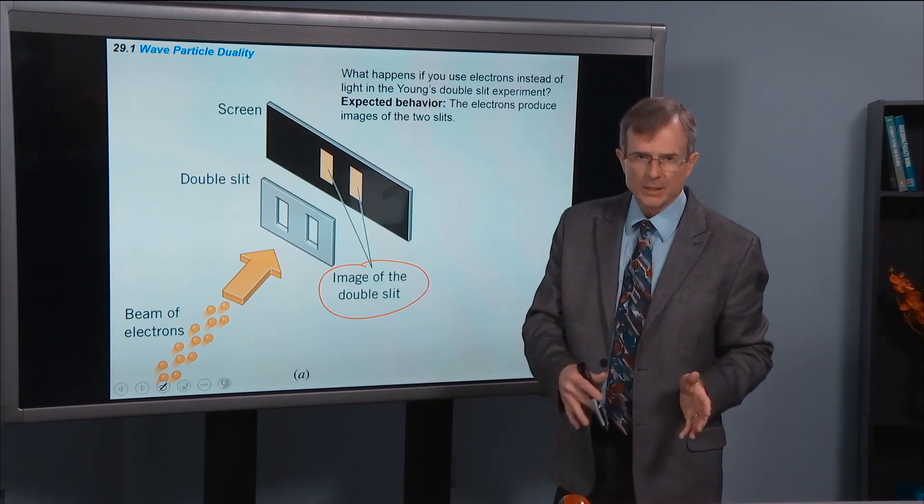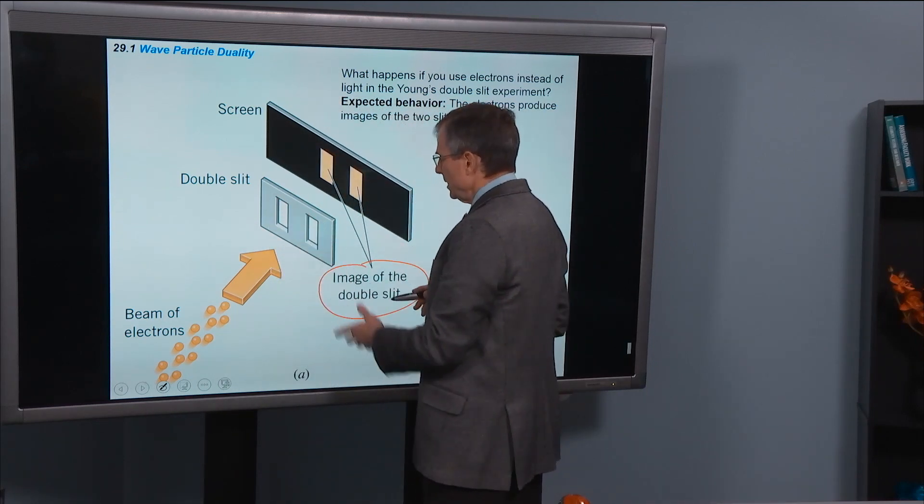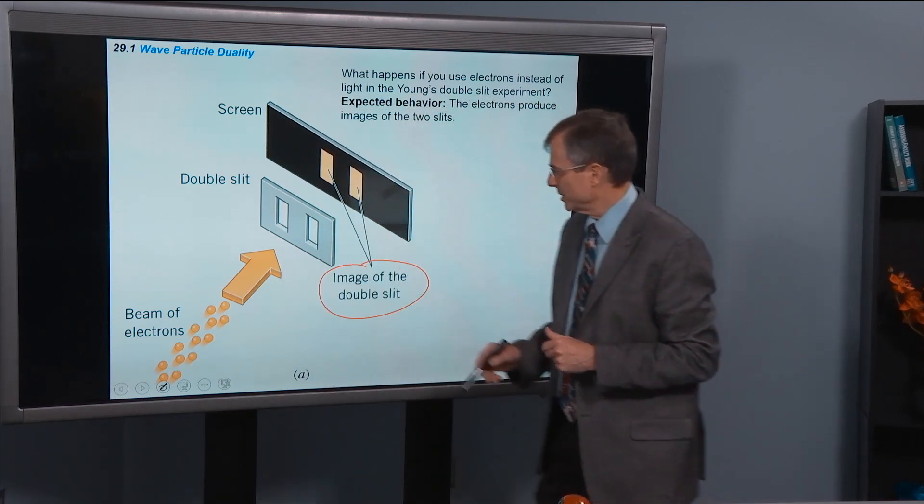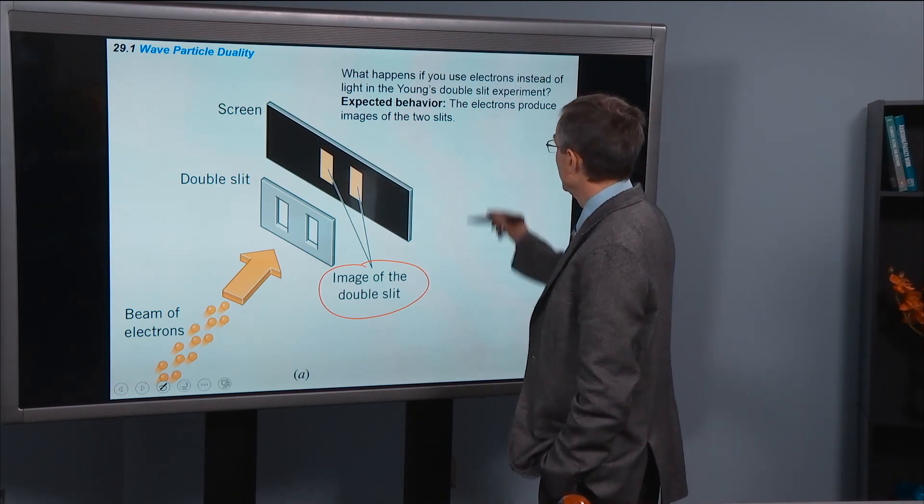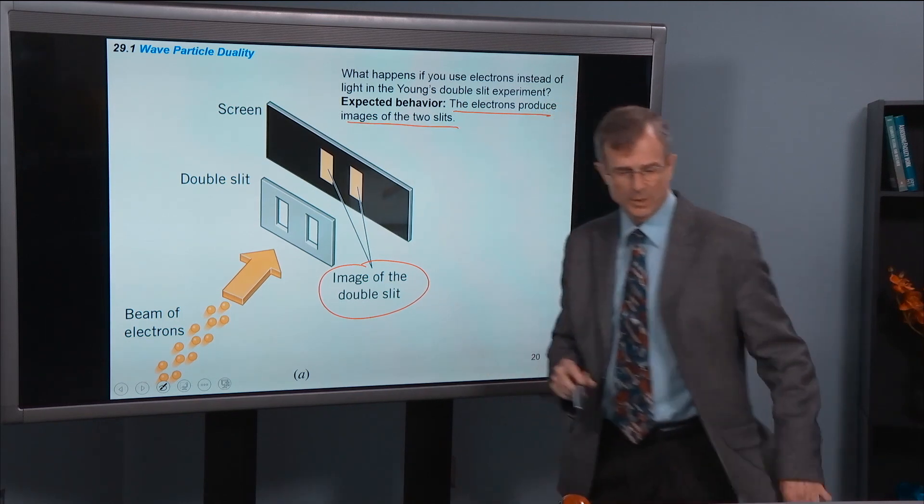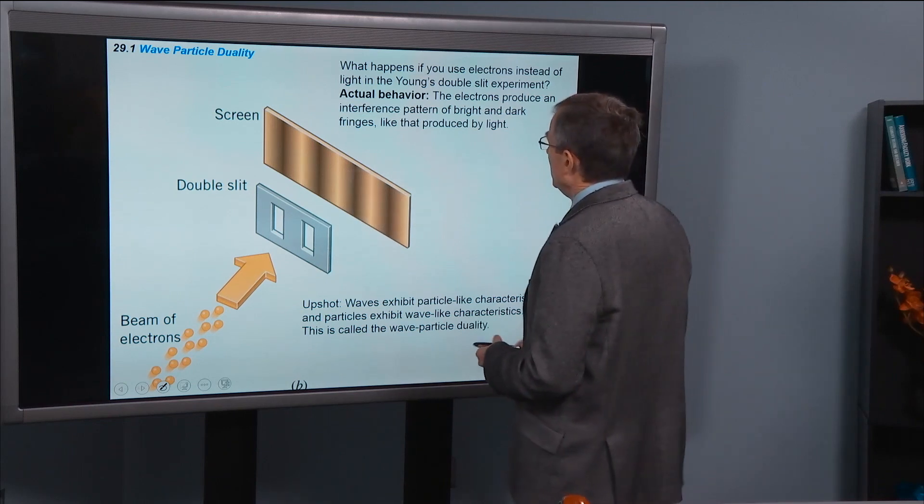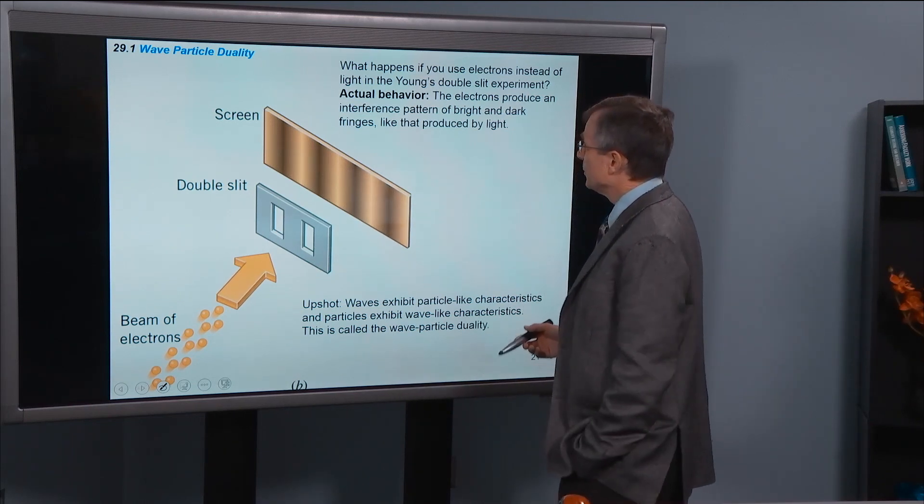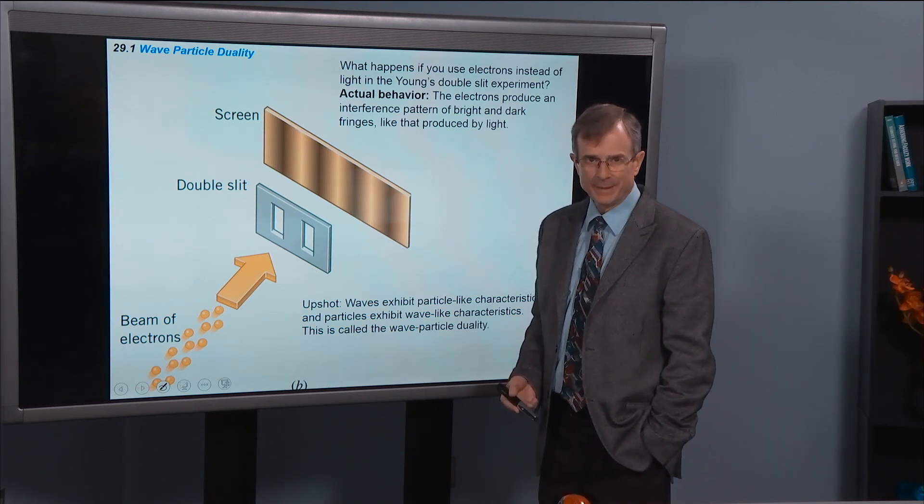Well, now we're talking about electrons. So we've got a beam of electrons. We shine it on these two slits. Wouldn't we expect just the image with two spots on it? The expected behavior would be that the electrons produce images of these two slits. What's the actual behavior? It's that the electrons produce an interference pattern of bright and dark fringes like that produced by light.